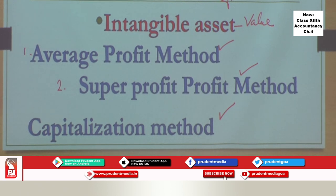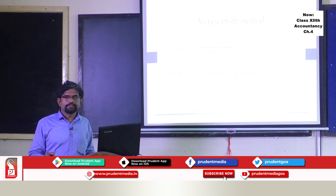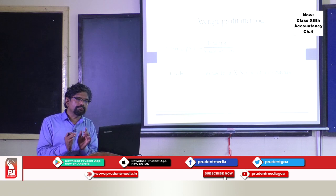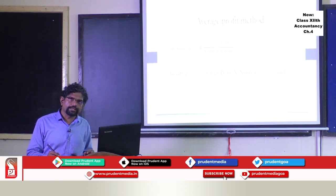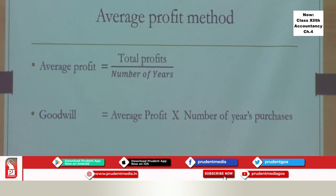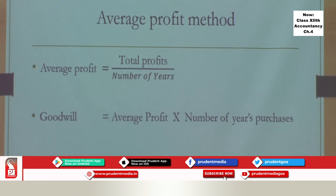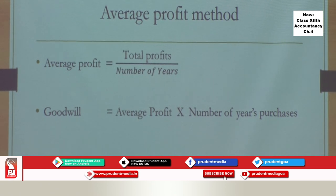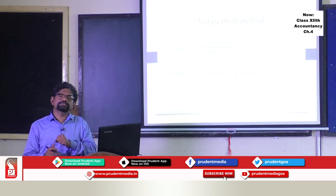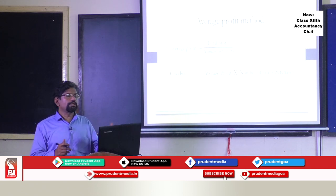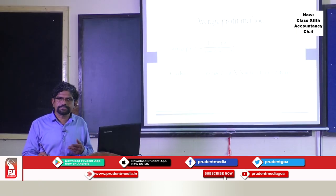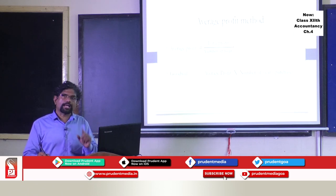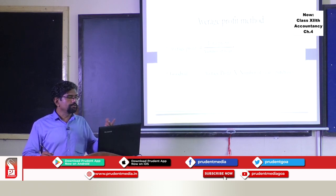Under the average profit method, goodwill equals average profits of the business multiplied by a number of years' purchases. Average profit is the total profits of certain years — say three or five years — added together and divided by the number of years. If adding three years' profits, divide by three; if five years, divide by five. This average profit is then multiplied by the number of years' purchases — one, two, three years' purchases, and so on.